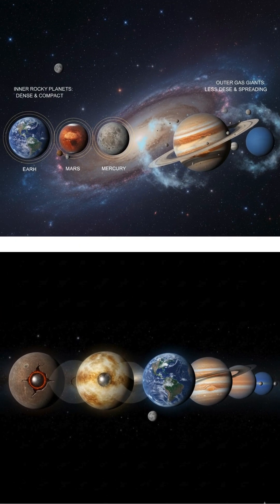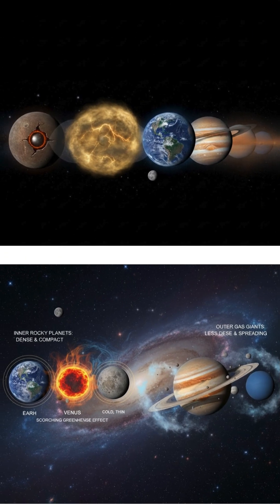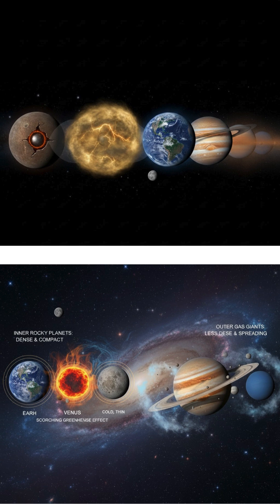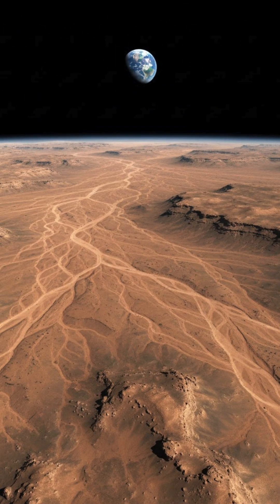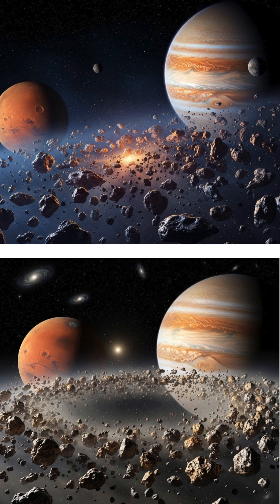They are denser and more compact than the outer planets. The conditions on these planets vary drastically, from the scorching, runaway greenhouse effect on Venus to the thin, cold atmosphere and ancient riverbeds of Mars, with Earth being the only one known to host liquid water and life. Orbiting between Mars and Jupiter is the asteroid belt.